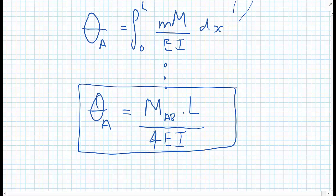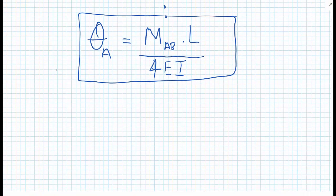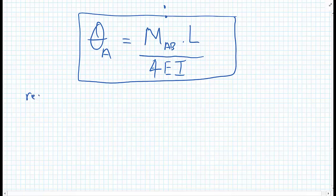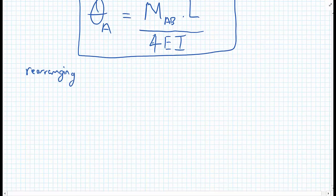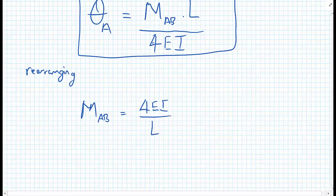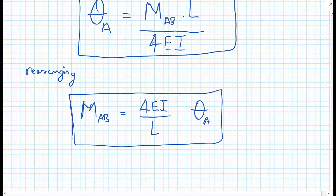Now that we have this, I'm going to rearrange it to make MAB a function of theta A. Rearranging, we get MAB equals 4EI divided by L, multiplied by theta A. This is a really important result that we will be using in subsequent methods.